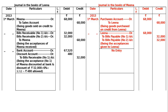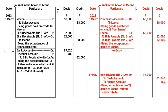The first bill was dishonored by Mina, and noting charges of Rs. 55 were paid. The second bill was retired on 4th May 2009 under a rebate of 6% by mutual agreement. The second bill's date came first. On 4th May, bills payable number two account debited Rs. 32,000, to cash account Rs. 31,840, to rebate account Rs. 160. Being acceptance number two given to Lina, retired under a rebate.